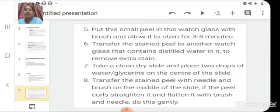Now clean a slide and place two drops of water or glycerin on the center of slide. Slide is nothing, just a piece of a glass, rectangular piece of a glass. It has a transparent glass on which we put our sample. And we will transfer our stain cell sample onto the slide, clean slide. And then after placing it over there, we will put two drops of glycerin. And transfer the stain peel with a needle and brush on the middle of the slide. And if the peel curls, straighten it and flatten it with a brush and needle and do this very gently.